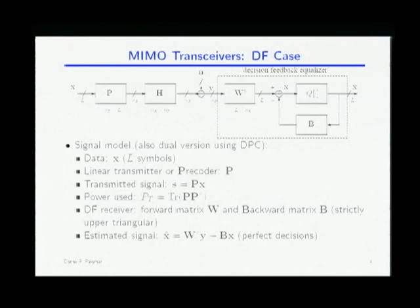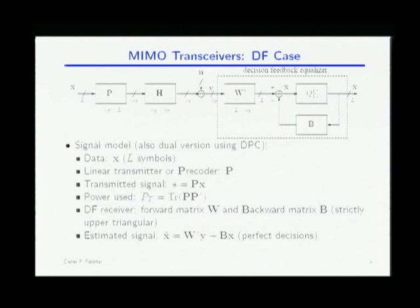How is this different from BLAST? The decision feedback scheme is known from the 60s; there's nothing new in this decision feedback scheme. What is new is how I design P, W, and B. In BLAST, typically you don't know the channel at the transmitter, so there is no precoder. I'm going to assume the channel is known at both sides — it's a slowly varying channel. If you don't know the channel at the transmitter, you need to use space-time coding or BLAST.